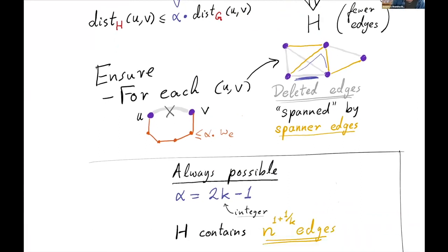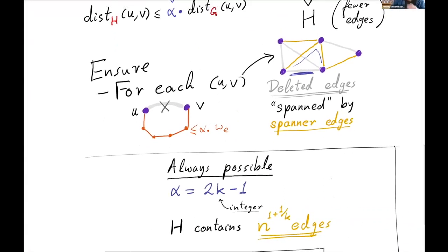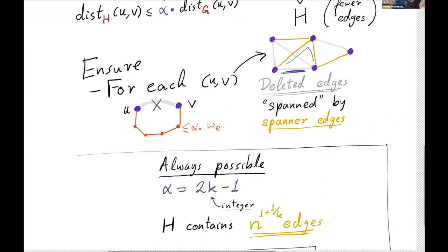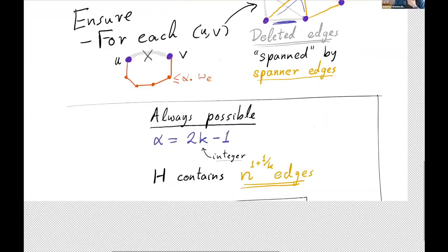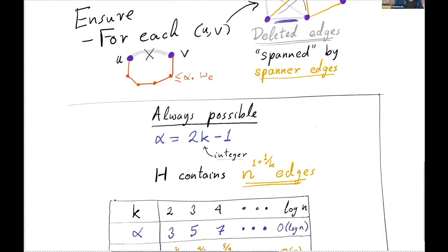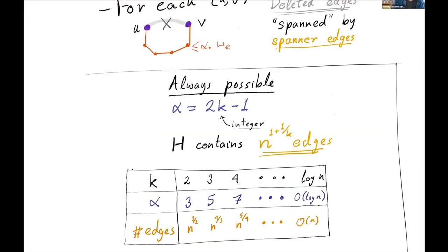Now we go to the existential results. We know that given an integer k we can always create a spanner with stretch 2k minus 1 that contains n to the 1 plus 1 over k edges. For example, if k is equal to 2, we get alpha equal to 3. So we get a spanner of stretch 3 with n to the 3 halves edges. This means any graph can be sparsified down to n^(3/2) edges while preserving distances up to a factor of 3.